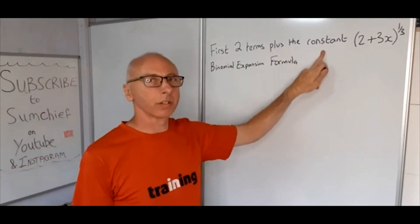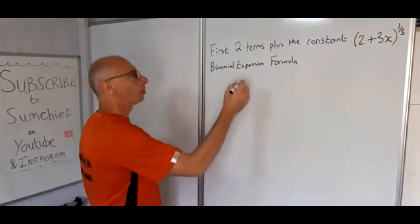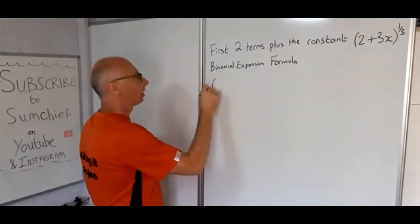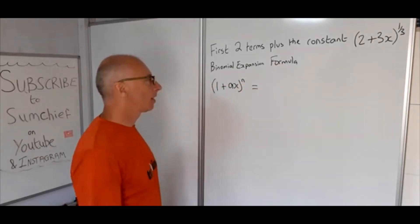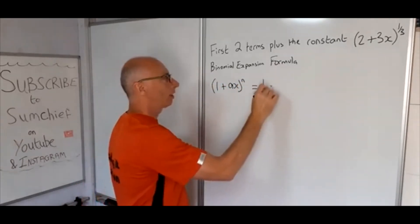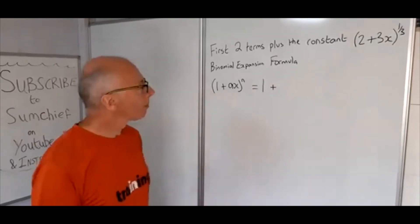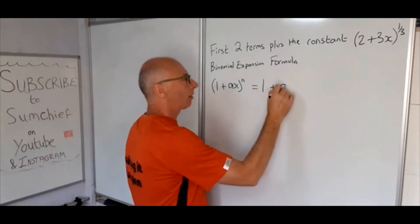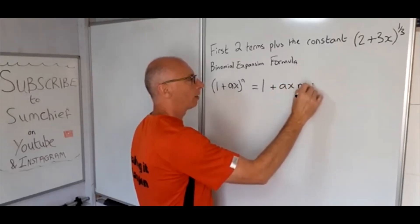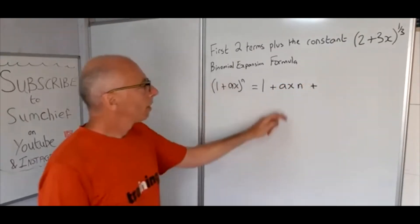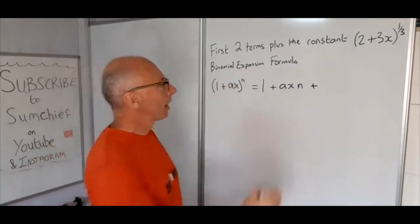Let's have a look at the binomial expansion formula. It says that (1 + ax)^n is like this: 1, that's the constant term, then we have ax times n, so this is the first term, that's basically x to the power of 1.